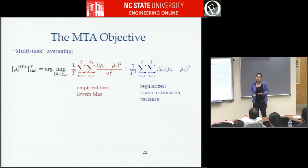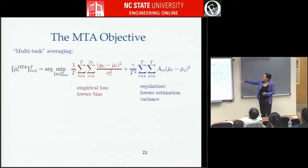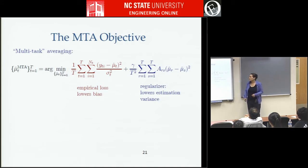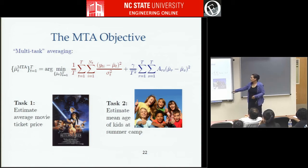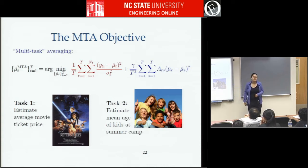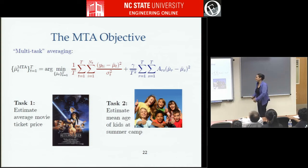The key idea is that we force the mean estimates to be closer together than they would have otherwise. Now, what kind of task do you apply this to? Let's get some intuition. Say I wanted to estimate the average price of movies and the average age of kids at summer camp. How much does a movie cost? Ten bucks — with one outlier at two dollars. What about the mean age of kids at summer camp? Responses: 4, 14, 8, 10, 8. The true means here might actually be very close, meaning you could literally use samples from one task to estimate the other mean and not be too far off.